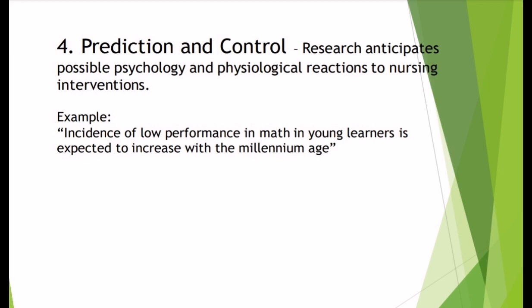You see, in research they can predict that in the millennium age, there will come a time that there will be an incidence of low performance in math among young learners. And because they were able to predict that, the research will help us to control, because we know what is the problem.